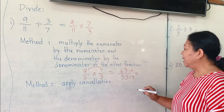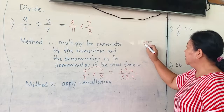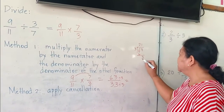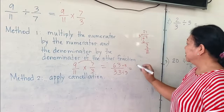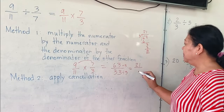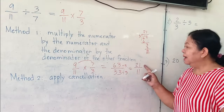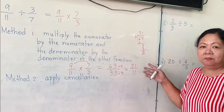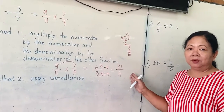Sixty-three divided by three — using another paper: two times three is six, bring down three, one. One times three is three. Three minus three is zero. So the answer here is twenty-one. Thirty-three divided by three is eleven. And then, twenty-one over eleven — no more number that could divide both the numerator and the denominator exactly.